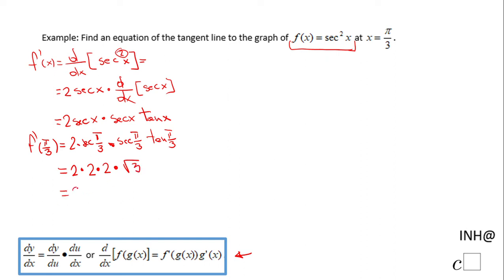So overall here we end up with 8 square root of 3, and this is f prime of pi over 3, which is nothing else than the slope of the tangent line. So this is the first information we need to write this equation.